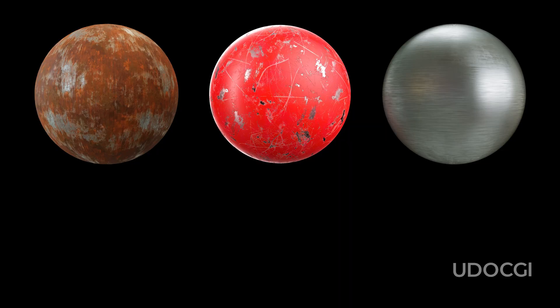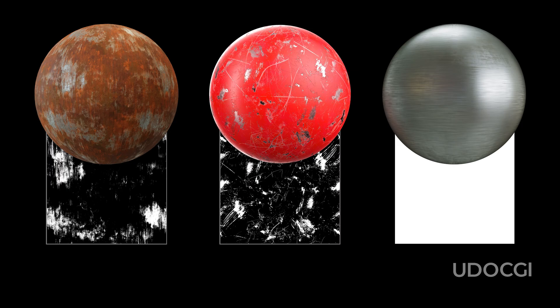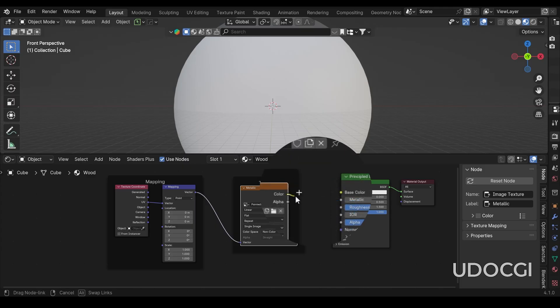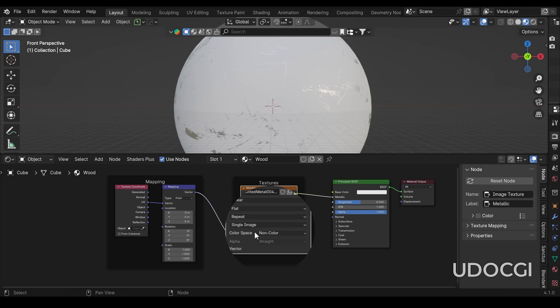Metals can also be rough, such as when oxidized or treated to have a matte finish, making them appear almost non-reflective. Despite these variations, the key point is that a material is either metallic or non-metallic. Therefore, the metallic map is typically either black or white, with no shades of gray. However, imperfections like dirt, dents, or rust can cause metallic maps to include varying values. In Blender, the metallic map is connected to the metallic socket of the principal shader and uses non-color space because it represents the material's metalness rather than its color.